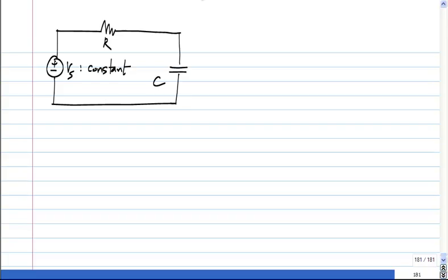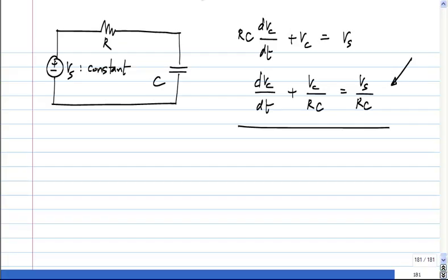Now, the differential equation as we already saw was RC dVc/dt + Vc = Vs, which also could be written as dVc/dt + Vc/RC = Vs/RC. Sometimes it is written like this. For us it is not very important because we are dealing with very simple cases, but many times the differential equation is written in this normalized form where the coefficient of the highest derivative is 1.